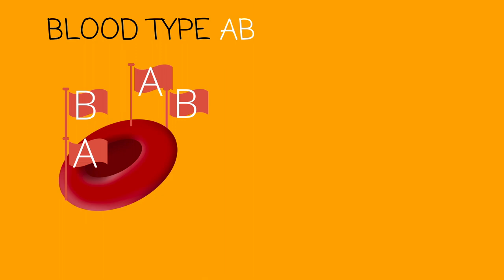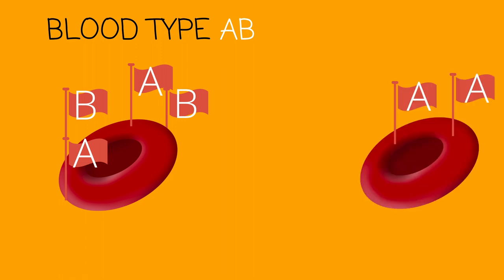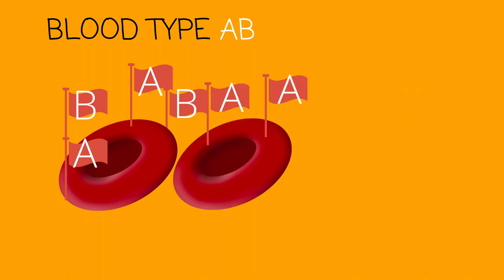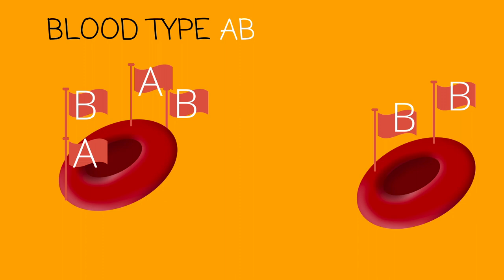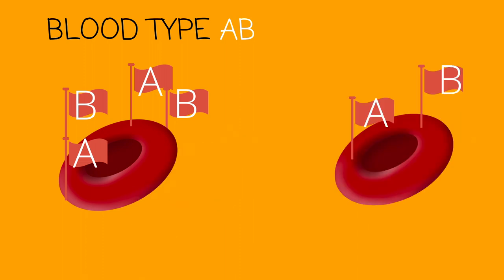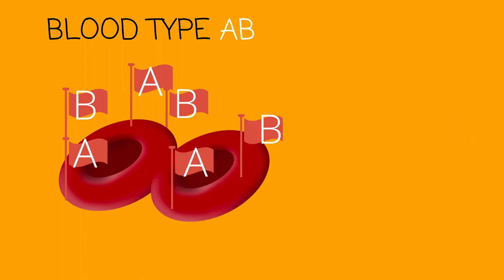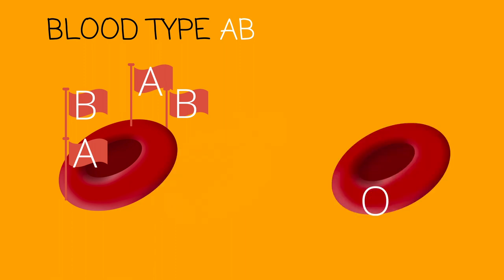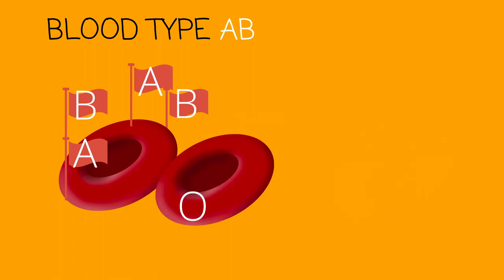Now let's look at blood type AB. Because AB represents both A and B, it has no army to fight against them. So if blood type A comes around, it will accept it. If blood type B comes around, it will accept it. If blood type AB comes around, it will accept it. And if blood type O comes around, it will accept it. AB is known as the universal receiver and will accept all blood types.